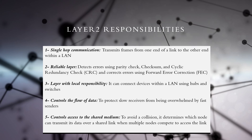Contrary to the network layer, which has a global responsibility, the data link layer has a local responsibility. Layer 2 can connect nodes within a LAN. If a node wants to communicate with another node in a different network, the data link layer will turn over the task to the network layer and its devices such as a router.